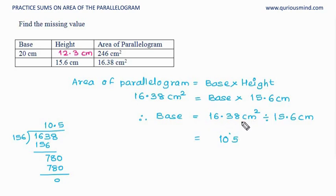1.05, and I am writing it here with decimal point because we have to also determine the decimal point. Here there are two digits after decimal point. Here there is one digit. 2 minus 1 is 1. So this has to move one digit this side, here. And so the answer becomes 1.05 cm is the base.